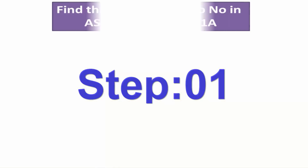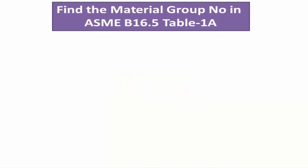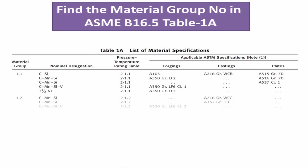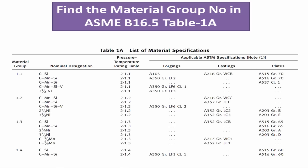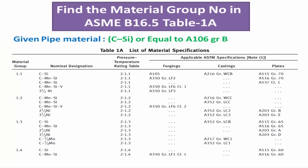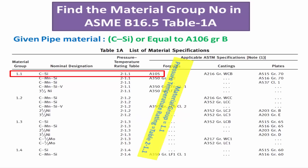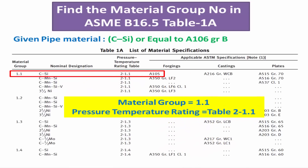Step 1: Find the material group number in ASME B16.5 Table 1A, and in parallel, select the pressure-temperature rating table. In our case, the material group number is 1.1, and the corresponding pressure-temperature rating table is Table 2-1.